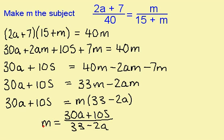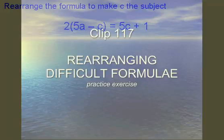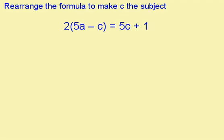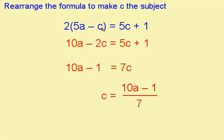m is now the subject of the formula. Here's a question for you to try — press pause and have a go. When you're ready for the answer, press play. I've started by multiplying out the brackets, giving me 10a minus 2c. Because I'm making c the subject, I want all the c's on one side, so this minus 2c goes here giving me 7c, and the plus 1 goes here giving me minus 1. To get c on its own, I now need to divide this by 7.